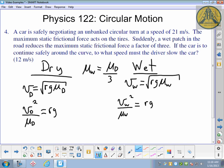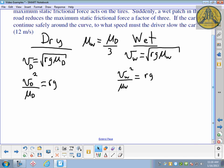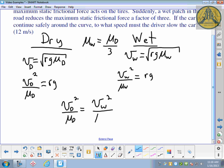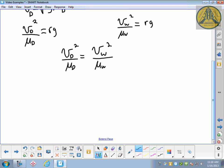Both of these equations equate to the same thing, RG, so they equate to each other. VD squared over mu D equals VW squared over mu W. Almost done, almost ready to put numbers in.